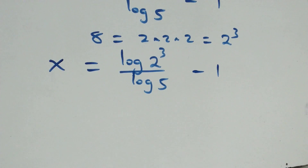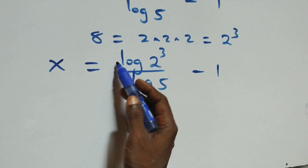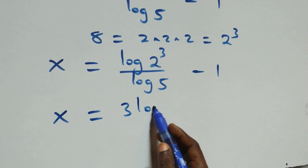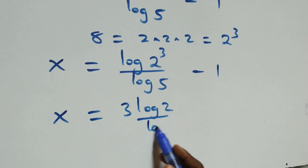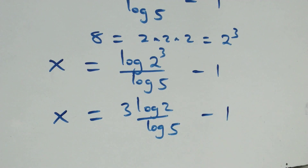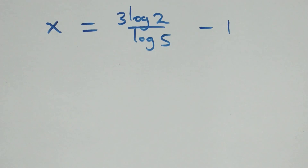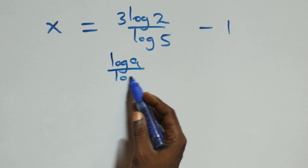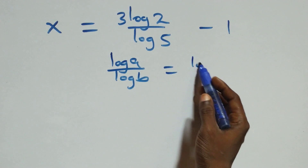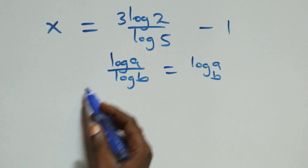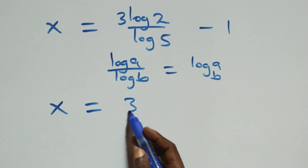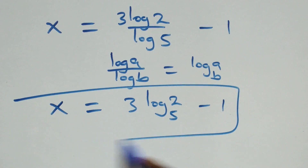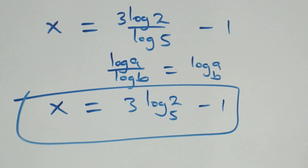We apply the power rule, bringing the 3 down: x equals 3 log 2 over log 5, minus 1. Then we apply the change of base formula, where log a over log b is the same as log a to base b. What we have here becomes x equals 3 log₅2 minus 1. That is, the value of x is 3 log₅2 minus 1.